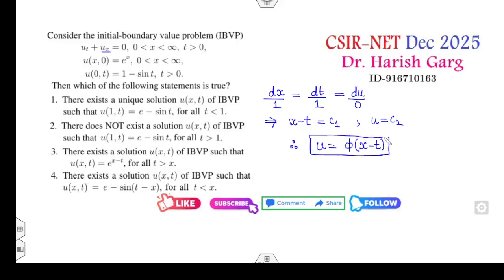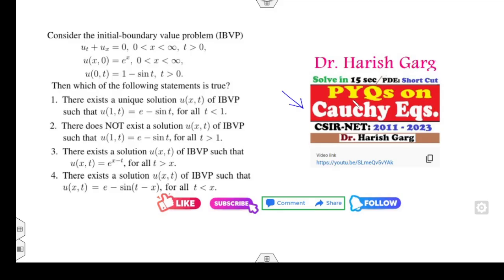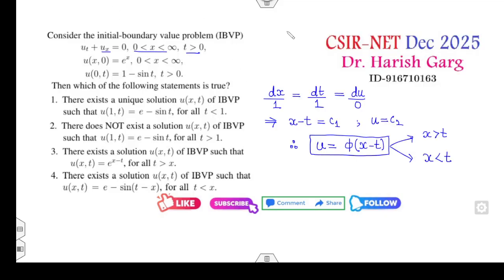This is your solution. Now consider the cases: x may be greater than t, or x may be less than t — these two possibilities. For more details you can watch my previous lectures on the Cauchy equations. So your solution is u = φ(x − t).